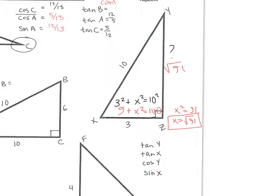Now I'll find tangent of y. Start at y — tangent is TOA, opposite over adjacent. Opposite is 3 and adjacent is the square root of 91, so it's 3 over the square root of 91. We don't want to leave a square root in the denominator, so we rationalize: multiply top and bottom by the square root of 91. The answer is 3 root 91 over 91.